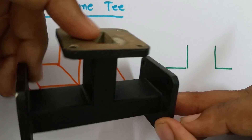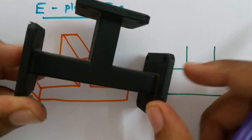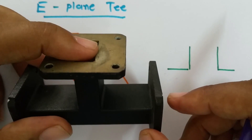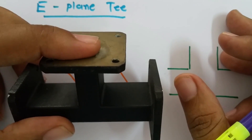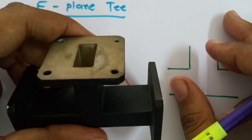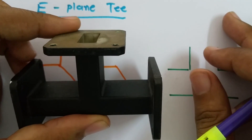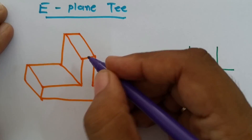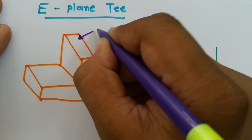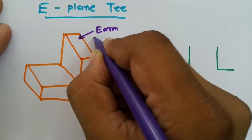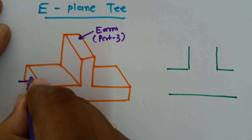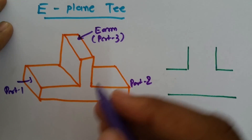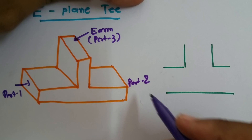If we give input over here, it gets divided into these two ports — port 1 and port 2 — and that will be out of phase. The E-arm is perfectly matched, so reflection at this port ideally will be 0.